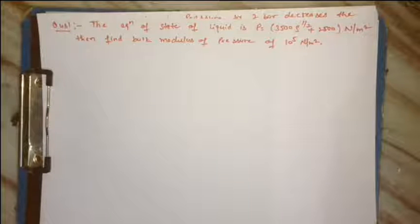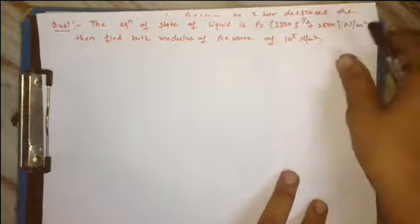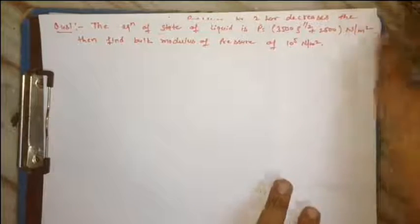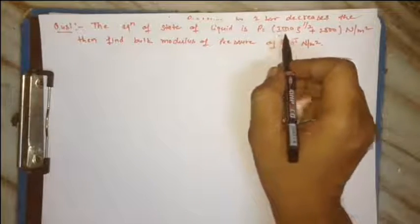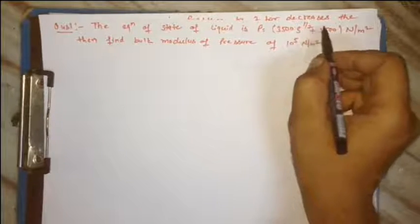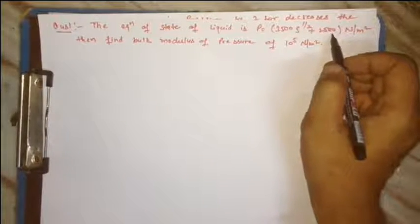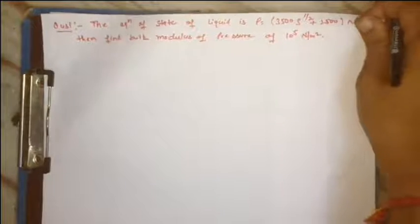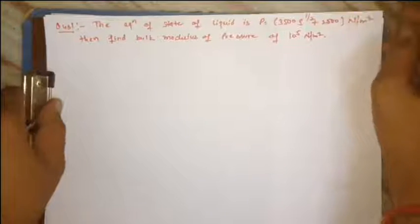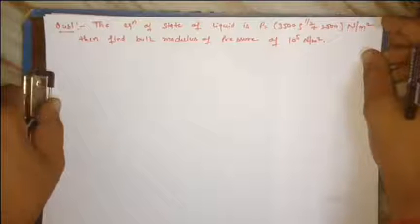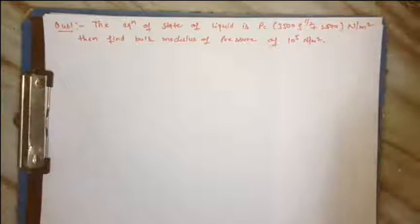Hello friends, there are some numerical problems from the previous lecture. The first numerical: the equation of state of liquid is P = 3500ρ^(1/2) + 2500 newton per meter square. Then we find bulk modulus at pressure of 10 to power 5 newton per meter square.